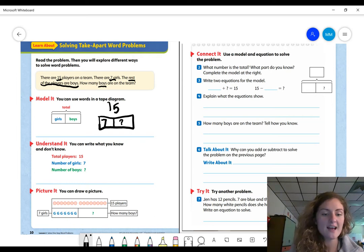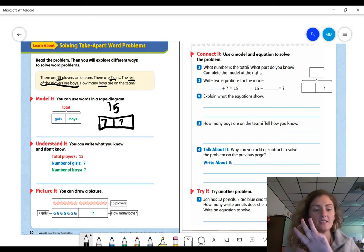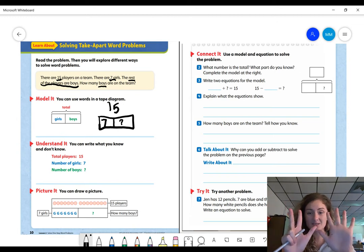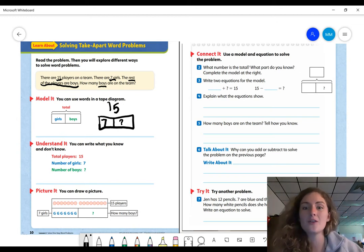So looking over here and looking at what part we haven't used, how many of the players are boys? So we know that seven is part of that 15. So let's count how many we have. 8, 9, 10, 11, 12, 13, 14, 15. How many players were boys? 8, right? So now let's go over here.